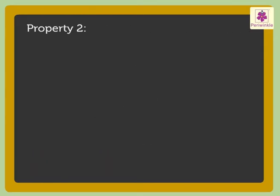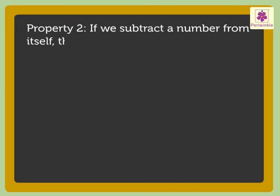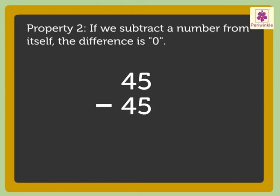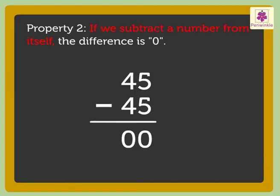Property 2: If we subtract a number from itself, the difference is 0. Let us take the number 45. If we subtract 45 from 45, that is, if we subtract 45 from itself, we get the answer 0. This tells us that if we subtract a number from itself, the difference is 0.